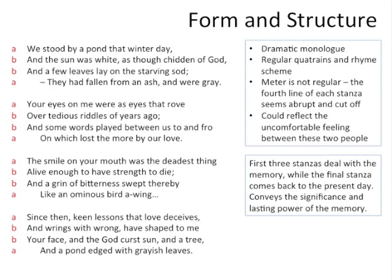Before we analyse the language of the poem, let's talk about form and structure. This is a dramatic monologue, written from the perspective of one speaker dealing with his particular thoughts and feelings. It has a fairly regular structure, written in quatrains — four-line stanzas — with a regular ABBA rhyme scheme throughout. That rhyme scheme could reflect a sense of a cycle: every stanza begins the same way it ends, giving the feeling that the memory is something he constantly comes back to.